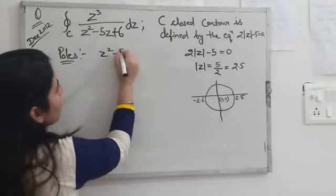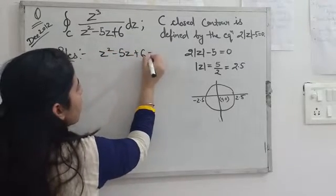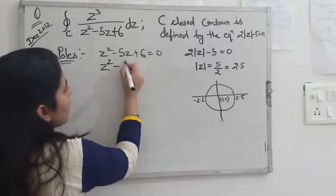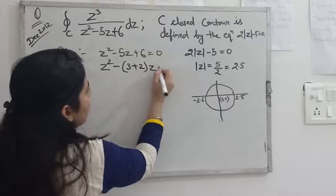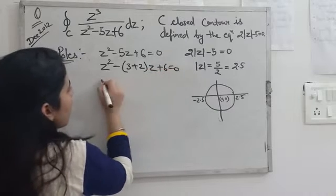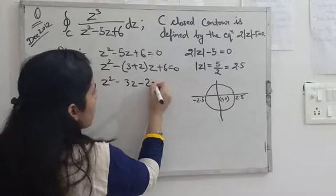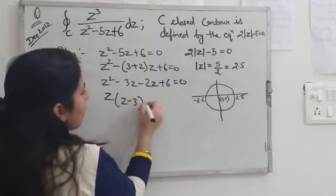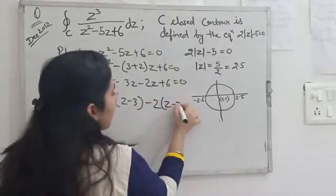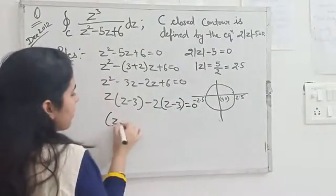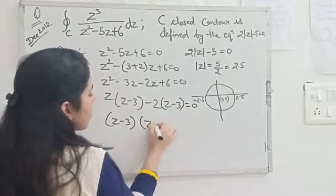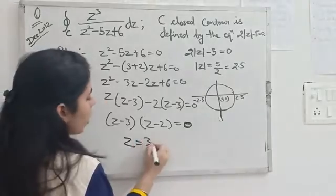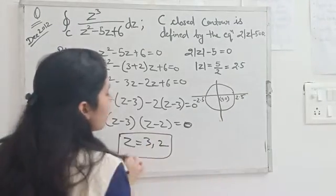z² - 5z + 6 = 0. When we split the middle term, we get z² - 3z - 2z + 6 = 0. This gives z(z - 3) - 2(z - 3) = 0, so (z - 3)(z - 2) = 0. From this equation, z = 3 or 2. These are the two poles.